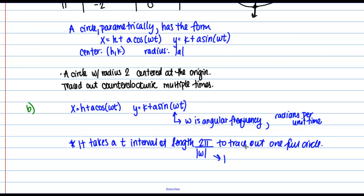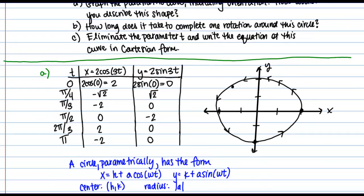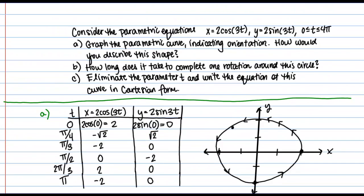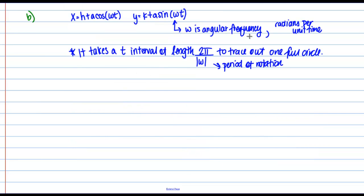It takes a T interval of length 2π over the absolute value of ω to trace out one full circle. And we can actually refer to this as the period of the rotation if we wanted to. So once we know that little fact, it's not hard to figure out the answer to part B. How long does it take to complete one rotation around the circle? So in our case, if we look at our equations here, we see that ω is 3. So in our case, ω is 3. So my period, or the length of time it takes for one rotation, is going to be 2π over 3.